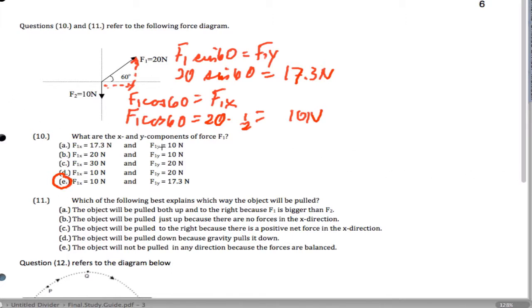Now, which way is this object going to be pulled? Well, let's see. I've got F1y of 17.3, I got this 10 newtons down, and I have a little element to the right. So what this means is that we're going to be up and to the right, so A would be the best answer for number 11.